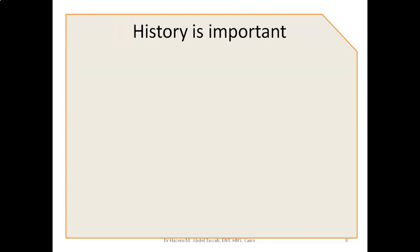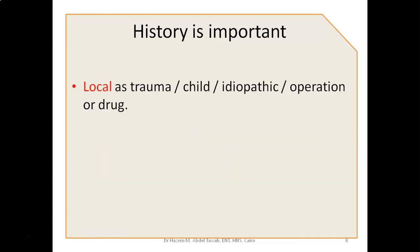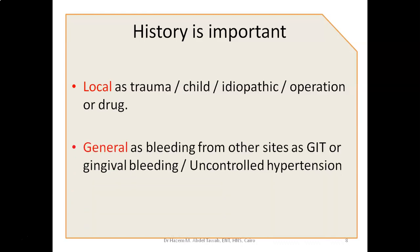History is always important, so take some time with it. Was there a trauma causing a fracture? Was the child doing some nose picking? Idiopathic cases come without a definite cause but can be correlated with the dry atmosphere. Was this an iatrogenic bleeding after surgery, or a drug affecting blood coagulation? You also need to know if there is bleeding from any other sites, like GI bleeding or gingival bleeding, which gives you an idea about bleeding coagulopathy. You also need to know about uncontrolled hypertension, especially if the bleeding is bilateral.